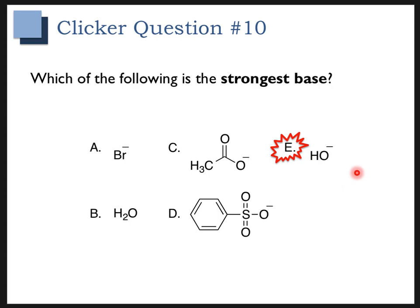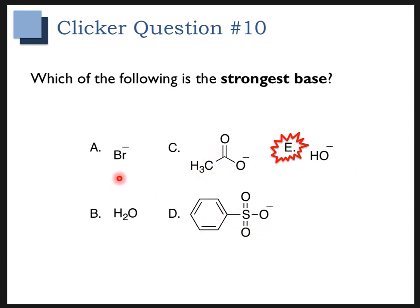Hopefully you were able to get this question correct. The strongest base in this case is going to be E. Remember, we're looking for a negative charge — the negative charges on oxygen are all going to be stronger bases than water. Also, oxygen is not going to be as electronegative as bromine, so C, D, and E are going to be better bases than bromine. E is the strongest base because it has a localized charge and is not resonance stabilized.